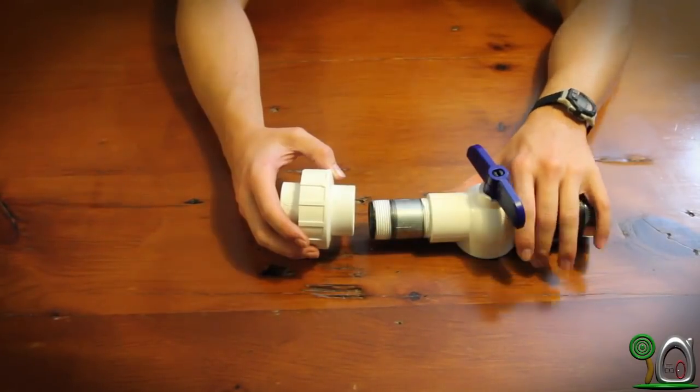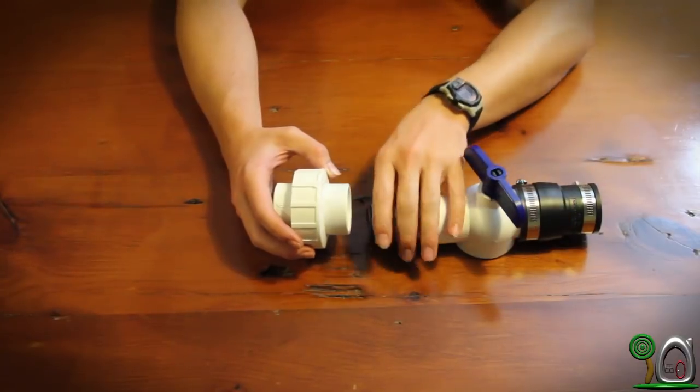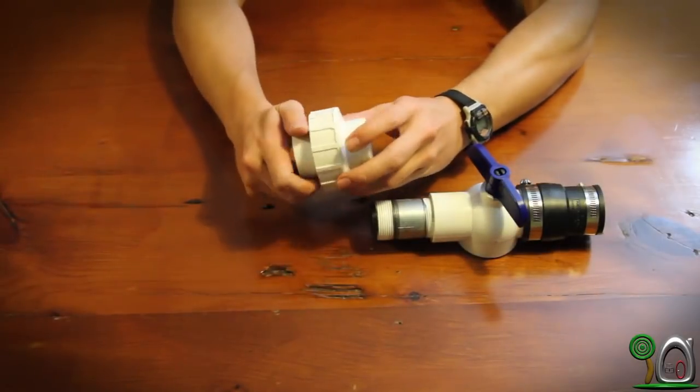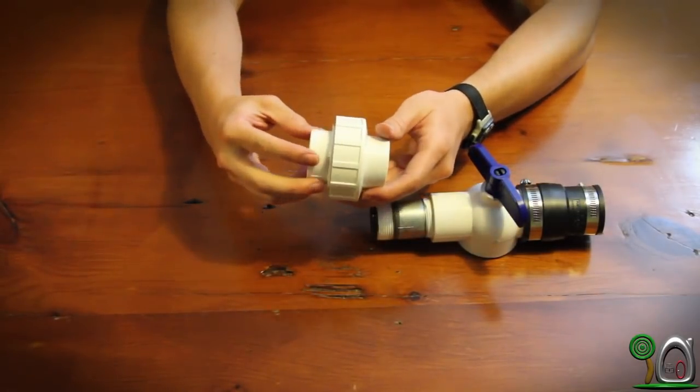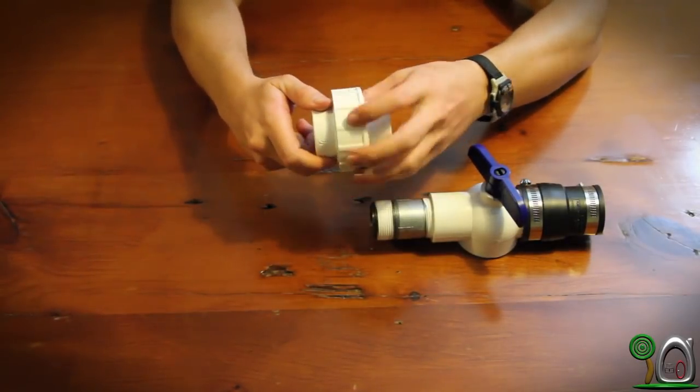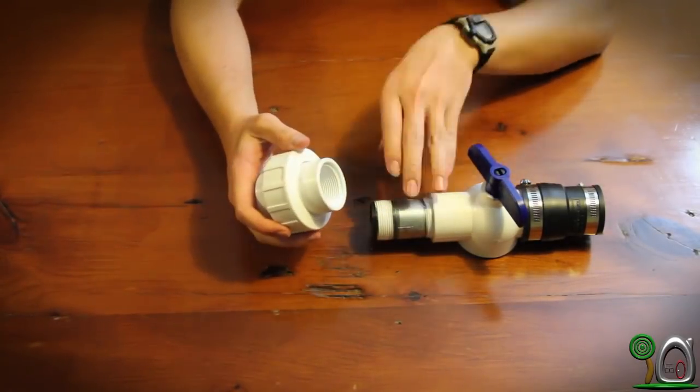Step 4. Connect your ball valve with pipe nipple to the 1.25 union. Make sure that you're going to make sure that your union is screwed together because if it's not, you might be losing this middle piece. So just make sure these are tight before you attach the two.